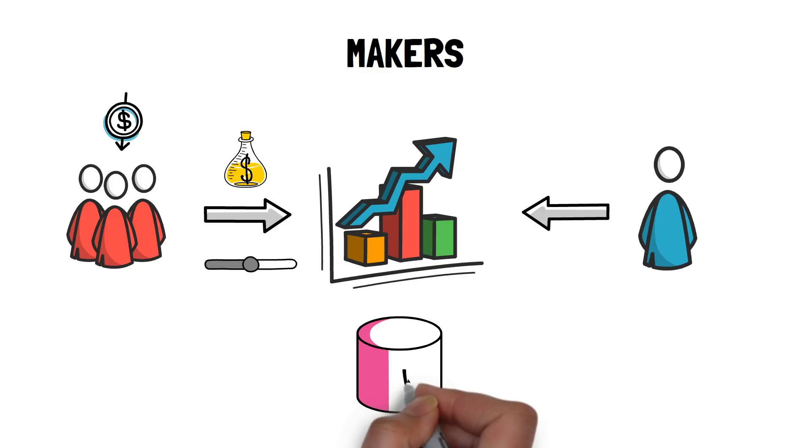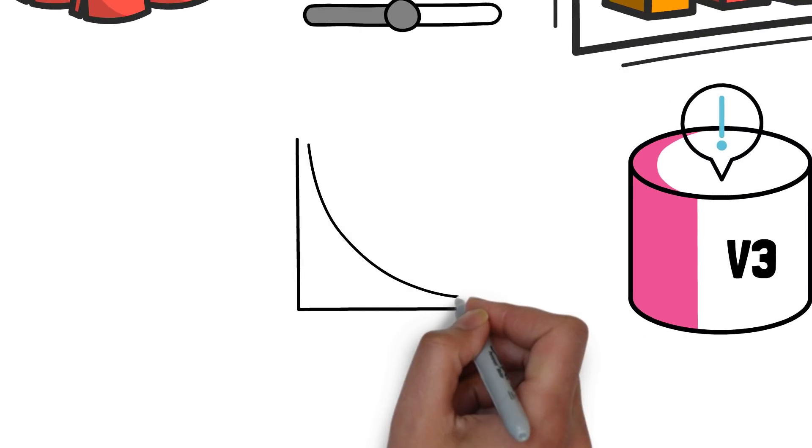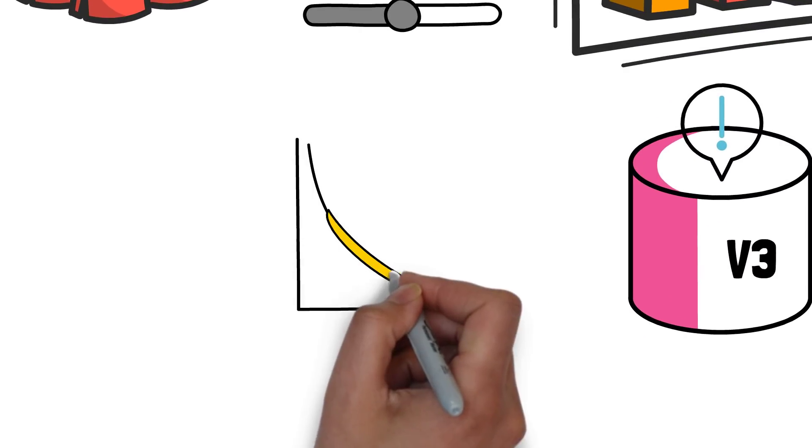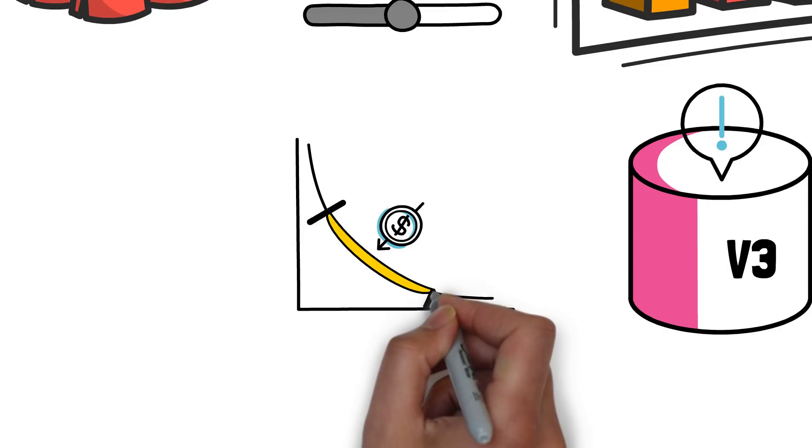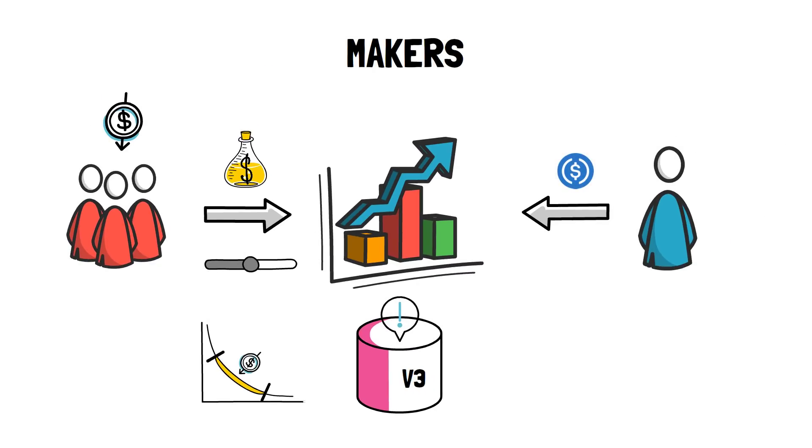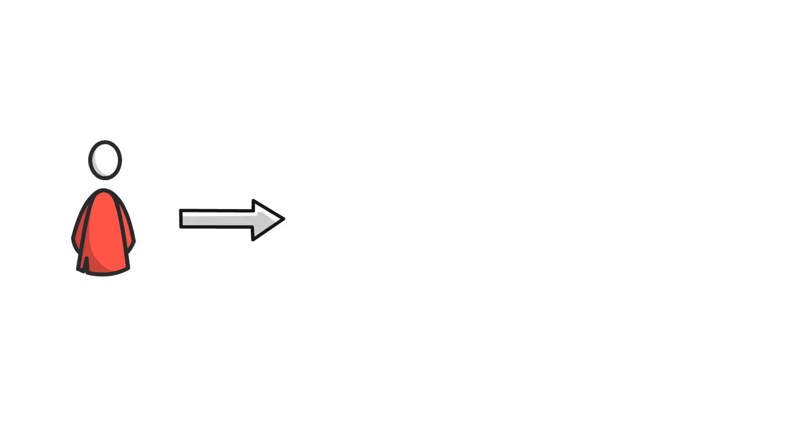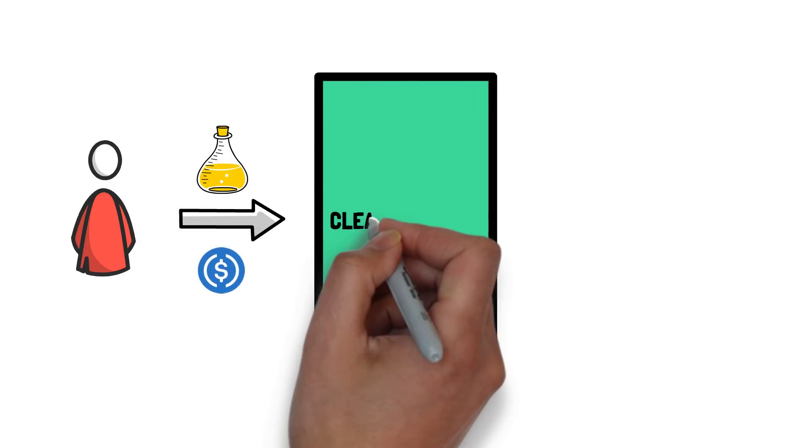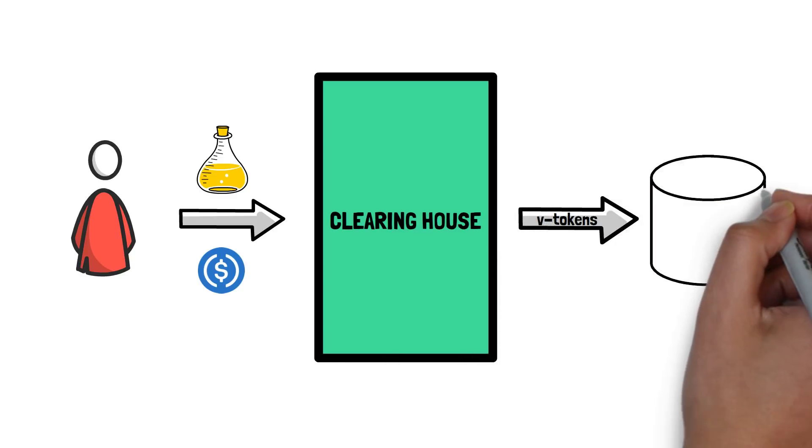Due to the Uniswap V3 design, providing liquidity is a bit more tricky than on other AMMs. In particular, makers have to decide in which price range they want to provide liquidity. They also only accrue fees from trades that go through the range where their liquidity is present. Makers, similarly to traders, can use USDC to interact with the perpetual futures exchange. When makers decide to provide liquidity in certain assets, they deposit USDC to the Clearinghouse contract, that in turn mints V tokens and automatically adds liquidity to the selected Uniswap V3 pool.